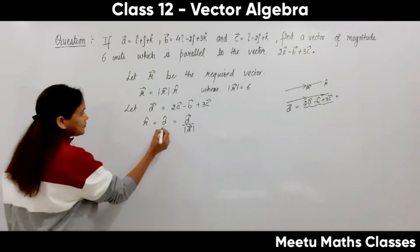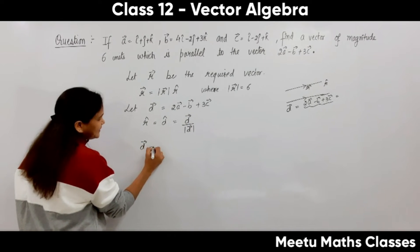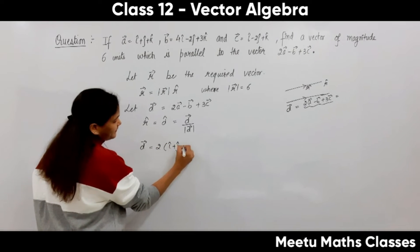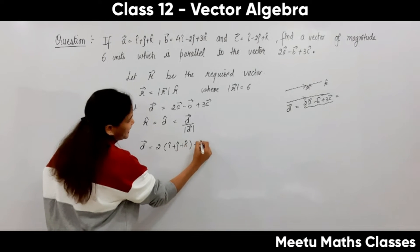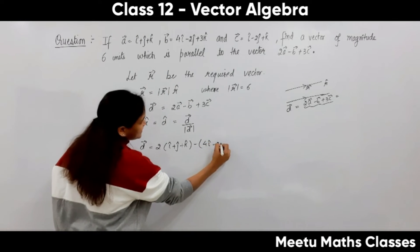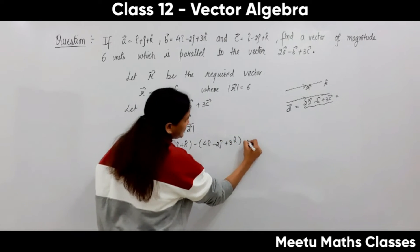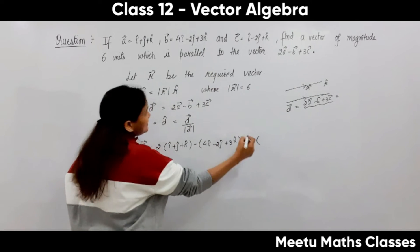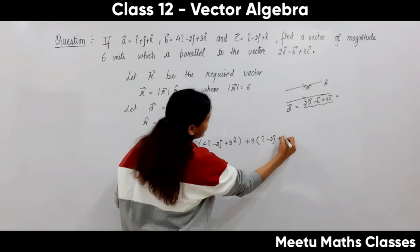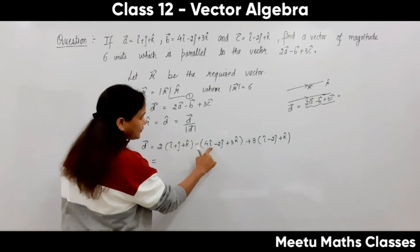Now first of all we are going to find out vector D. So vector D equals 2A minus B plus 3C. A is i plus j plus k, B is 4i minus 2j plus 3k, and C is i minus 2j plus k.